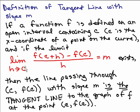of f of c plus h minus f of c over h equals m. If it exists, the reason I have to say it exists, we have to make sure that you're not going to get something undefined. Then the line passing through the point c, f of c with slope m is the tangent line to the graph of f at the point c, f of c.